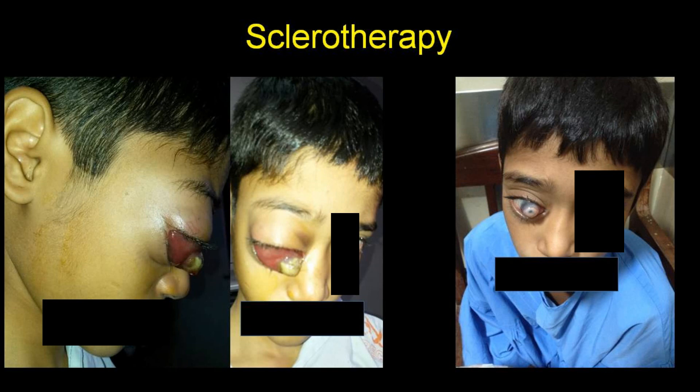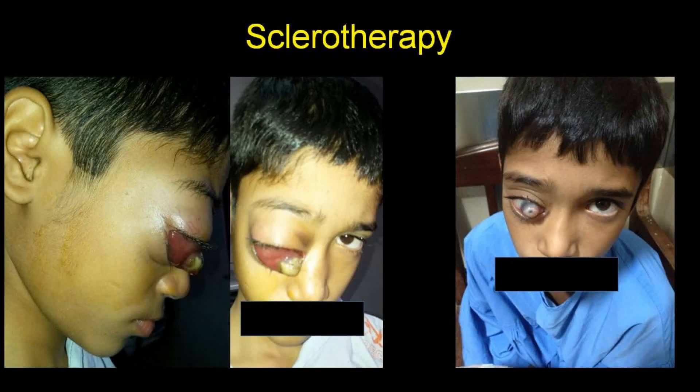One more case: this child had a lymphatic malformation behind the eye — his eye was completely popping out, close to touching his nose literally. Operation was again not possible because you would have to take out the complete eye. So we put a needle into the tumor and did the sessions slowly and gradually, and you can see his eyeball has gone back into the socket. This is the beauty of sclerotherapy — without surgery, by just putting in a small needle and injecting a drug, we can treat vascular tumors or vascular malformations.